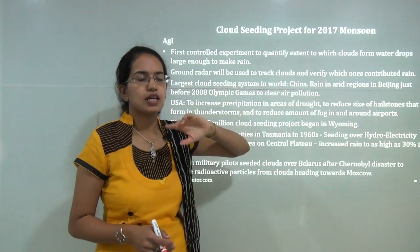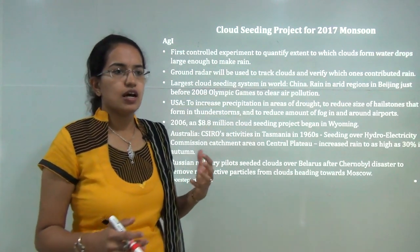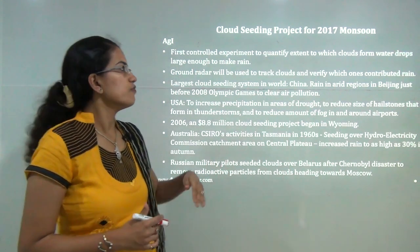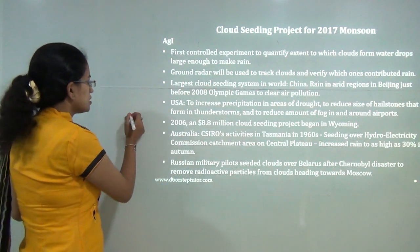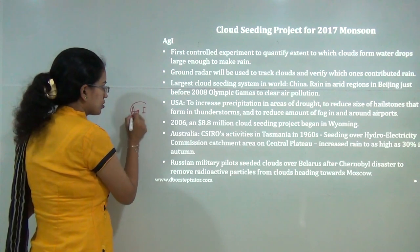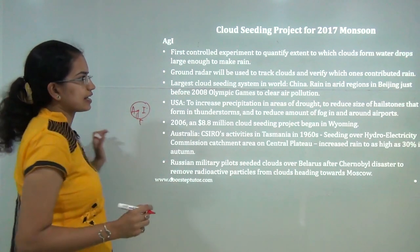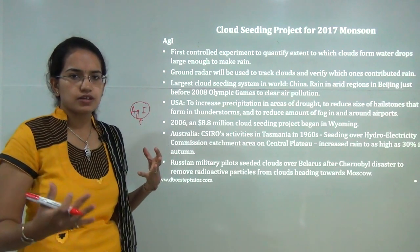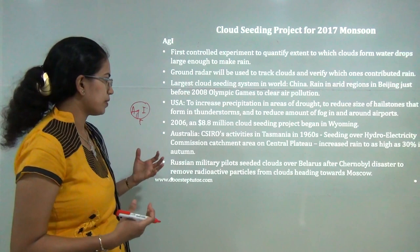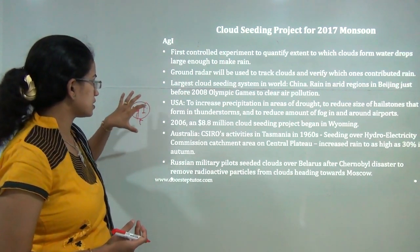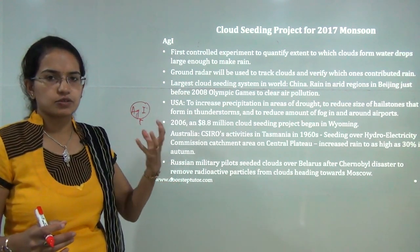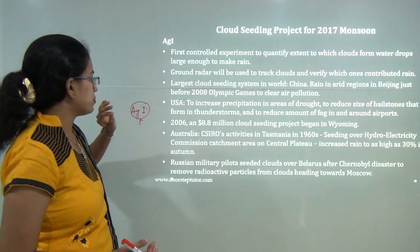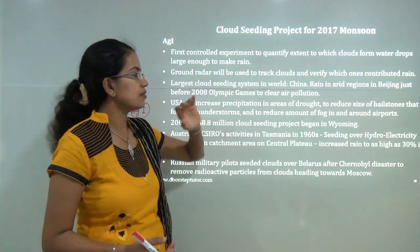The first topic we will cover is the cloud seeding project. In 2017, for good monsoon, Maharashtra government conducted a cloud seeding experiment. The project aims to sprinkle silver iodide onto the clouds, then track it with a ground radar system to study how monsoon rainfall variations could be managed. This is a first controlled experiment to quantify differences in rainfall patterns in India.